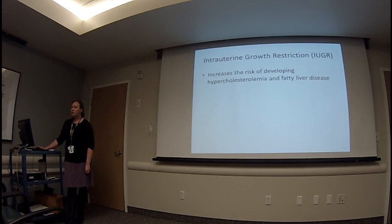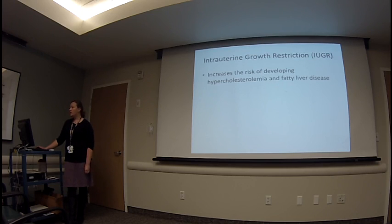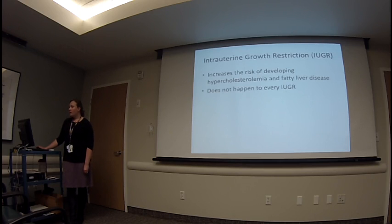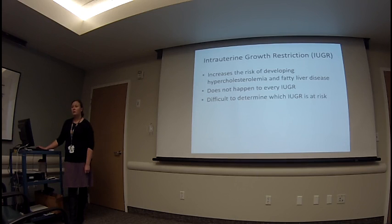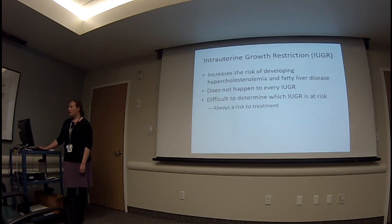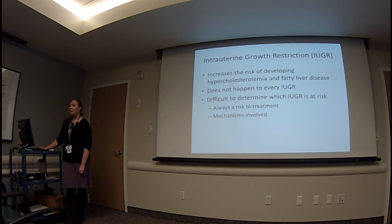Therefore it behooves us to know what are other predictors and associations with developing hypercholesterolemia that we can address in the pediatric timeframe. One of those is intrauterine growth restriction, or IUGR, which in epidemiologic studies has been shown to increase the risk of developing hypercholesterolemia as well as other components of the metabolic syndrome, including fatty liver disease. While it is an increased risk, it certainly does not happen to every IUGR individual, and it can be difficult to determine which IUGR individuals are actually at risk.